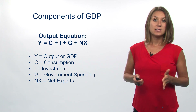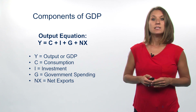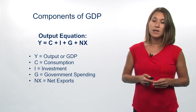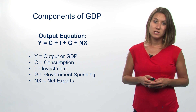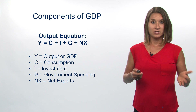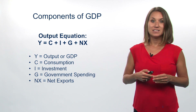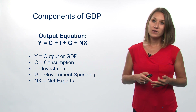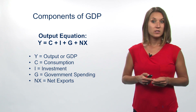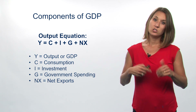Specifically, C, consumption, is household spending on goods and services. I, investment, is the spending on capital goods and services by firms — goods and services that they need to expand their businesses. G, government spending, shows the amount of goods and services that the government is buying, including spending by local, state, and federal government. And net exports, NX, is the difference between exports and imports. Exports are goods and services produced in the local economy and sold abroad, whereas imports are goods and services produced in a foreign country and sold domestically.